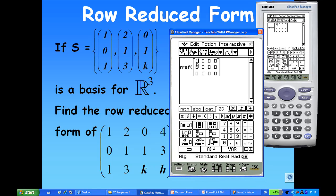And then I can enter the matrix here: 1, 2, 0, 4, then 0, 1, 1, 3, and then 1, 3, k, h. Then I press the enter button, execute.